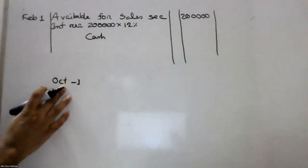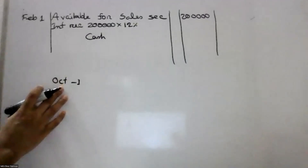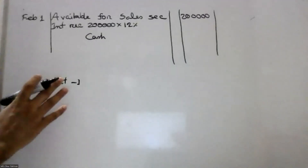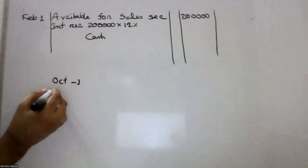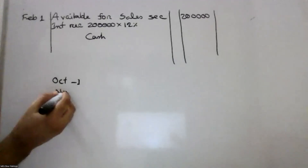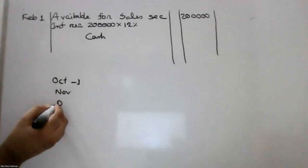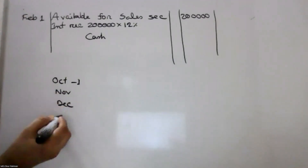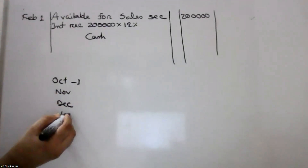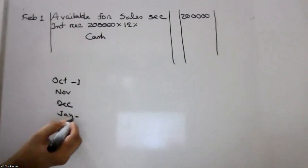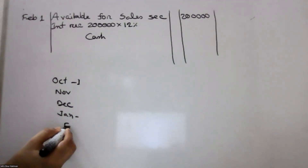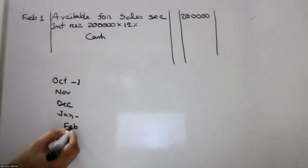October, November, December, January, February, March — counting the months for the interest accrual period.